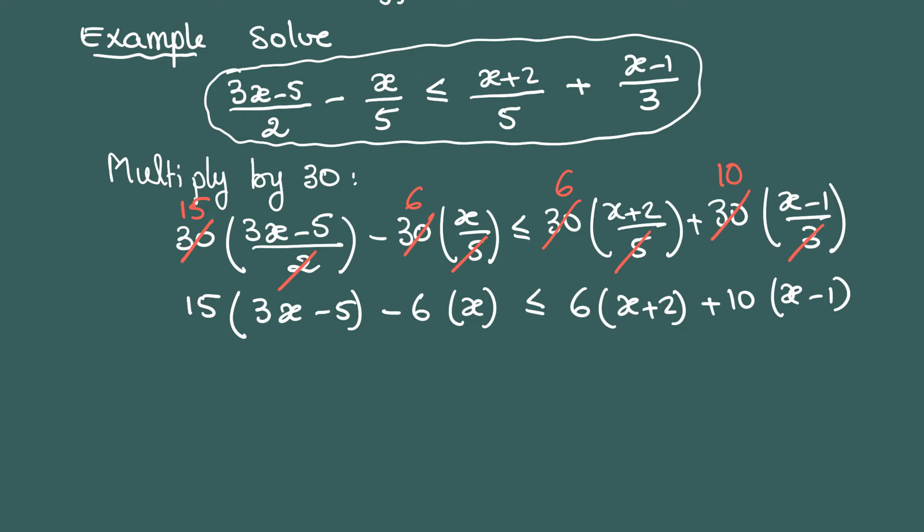Now we're going to carry out the multiplications. The next line will be 45x - 75 - 6x ≤ 6x + 12 + 10x - 10.